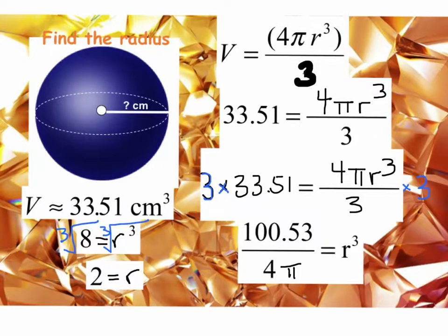Now we'll plug in the volume to be 33.51 that was given to us. And remember, we're trying to isolate the r. We're trying to get one single r by itself to find the radius of the sphere. Next, we'll multiply both sides by three to get rid of this denominator. So this three will cancel out, and now I'll have three times 33.51, which will give us 100.53.